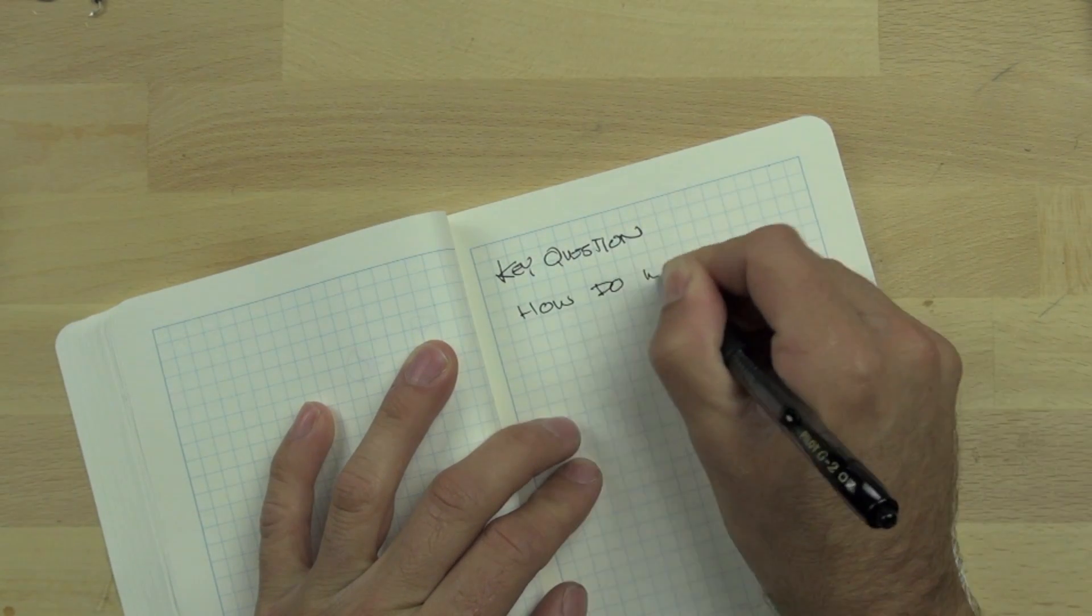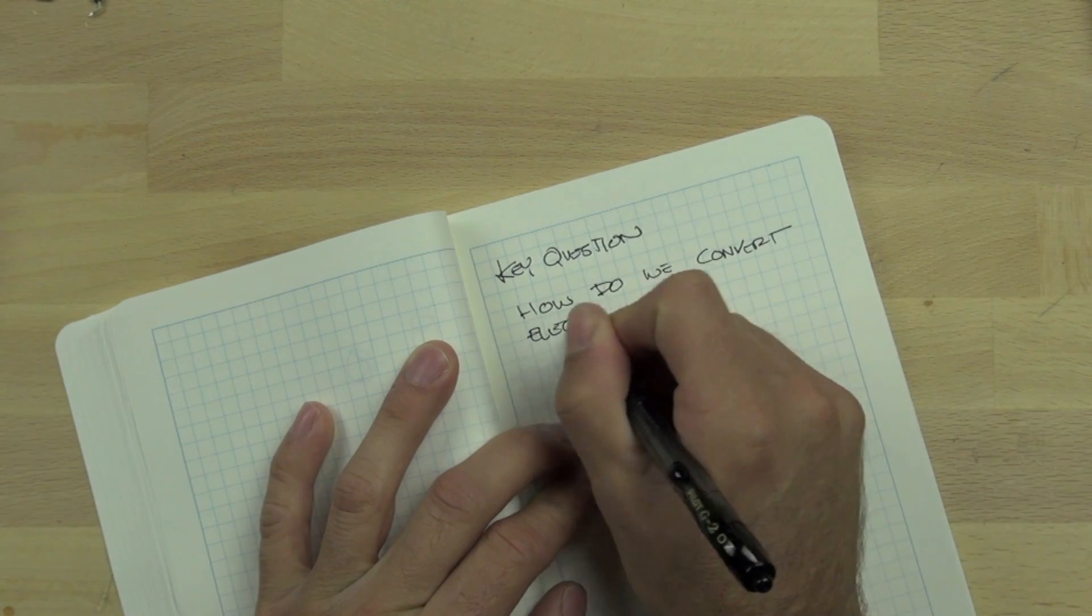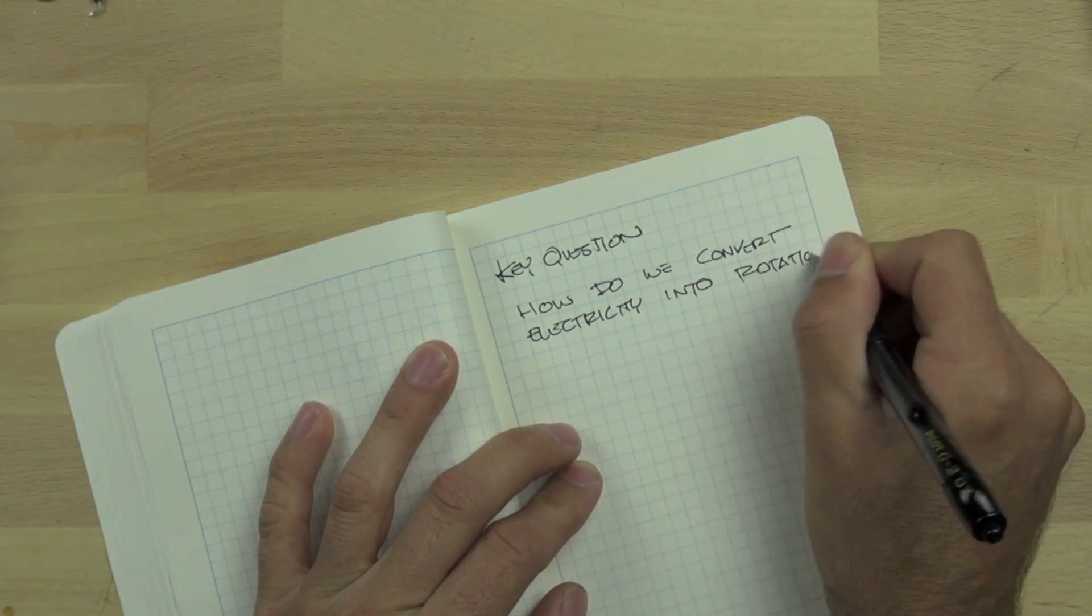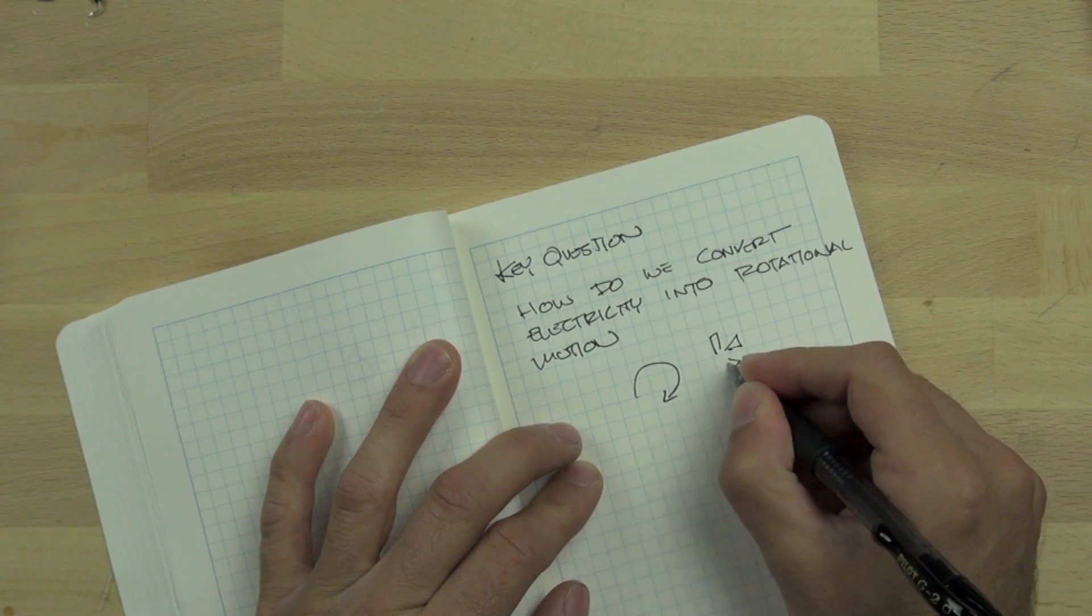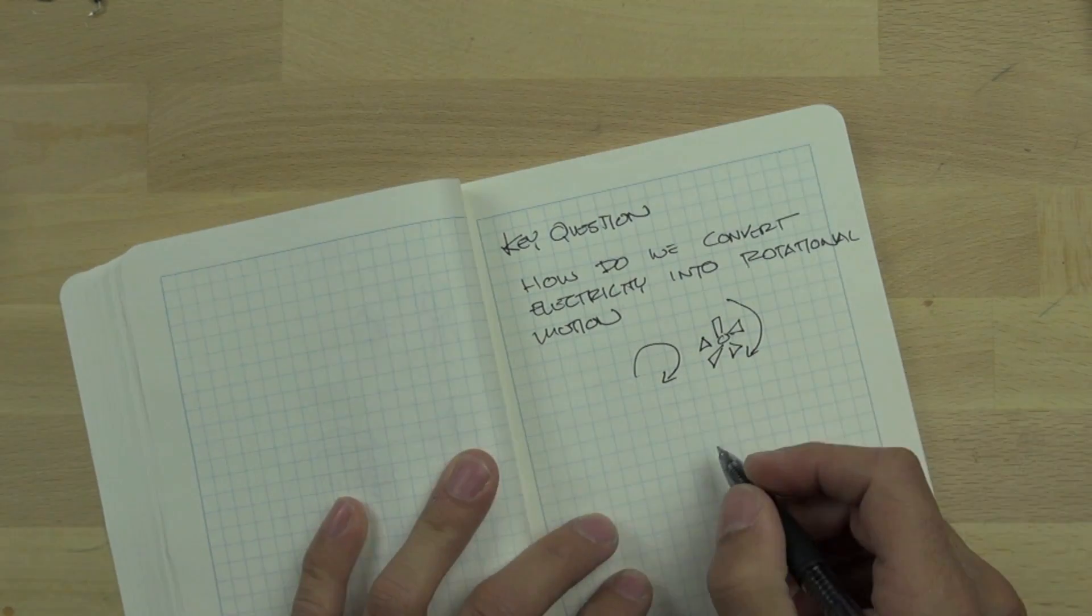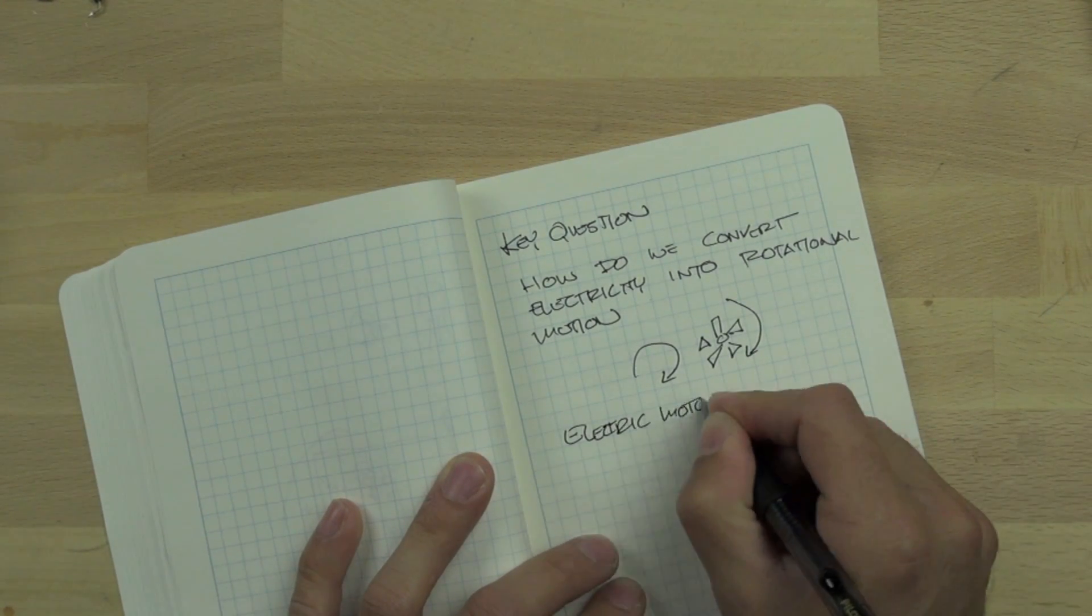Okay, today's key question is how do we convert electrical energy into rotational motion? And the way we're going to do that is we are going to use an electric motor.